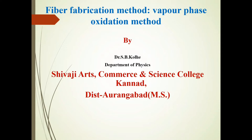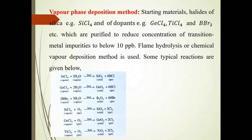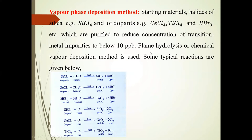We will discuss here Fiber Fabrication Method, Vapor Phase Oxidation Method, and Vapor Phase Deposition Method. The starting materials — halides of silica such as SiCl4, GeCl4, TiCl4, and BBr3 — are purified to reduce concentration of transition metal impurities to below 10 ppb. Flame hydrolysis technique is used here.